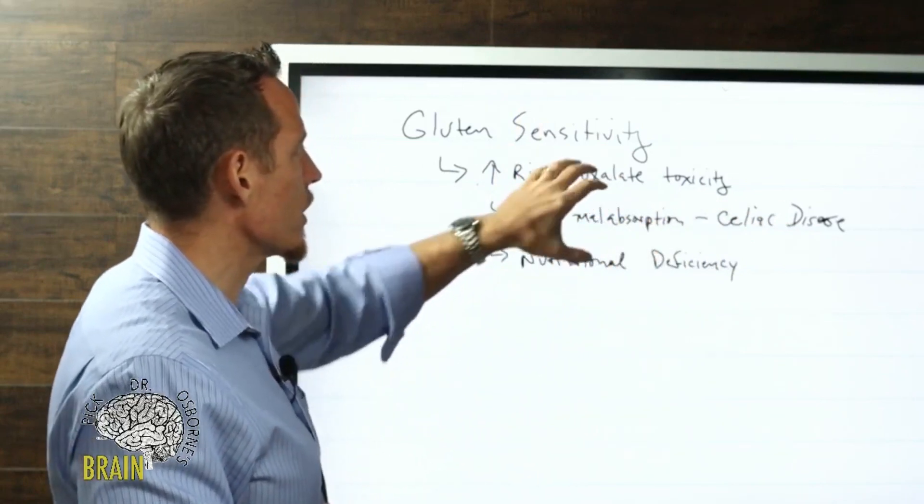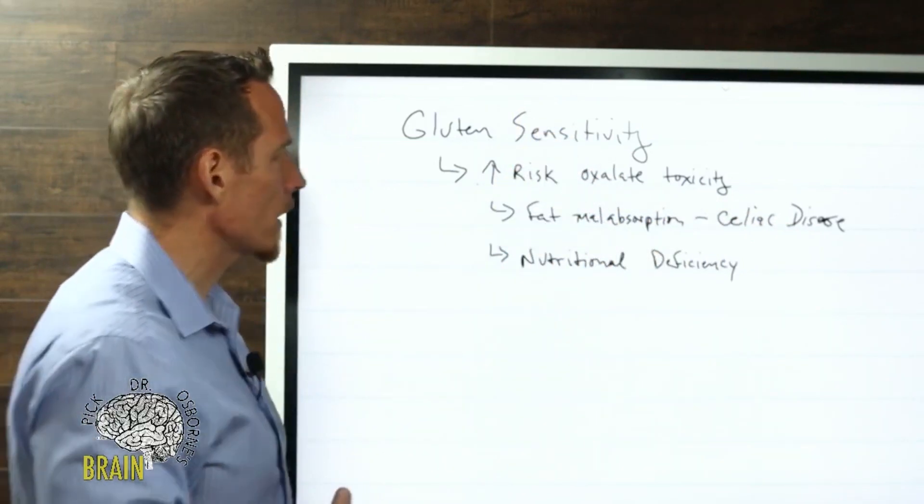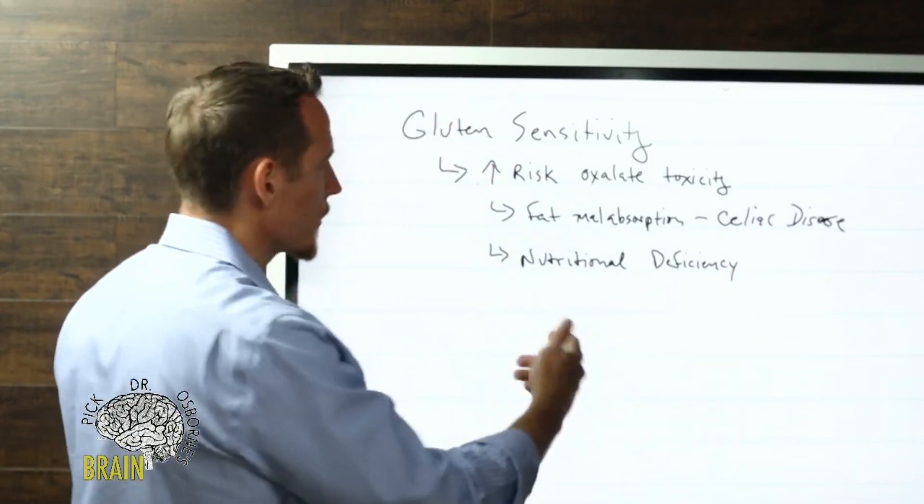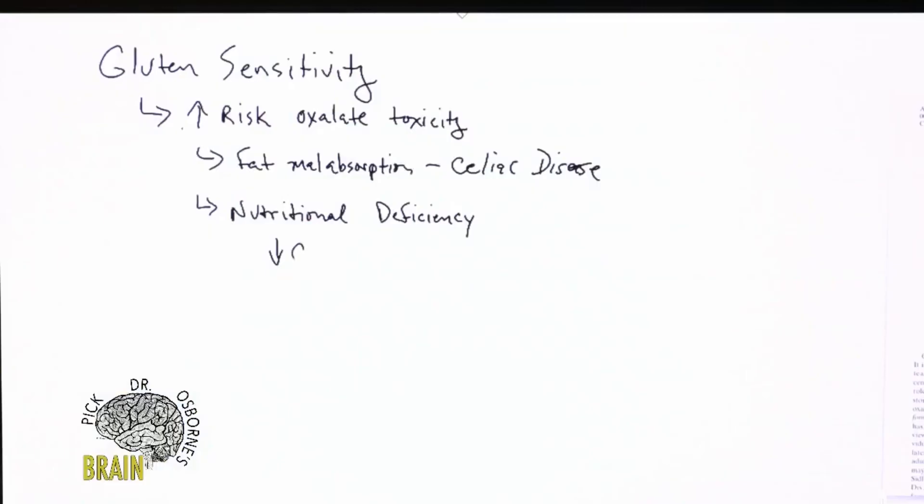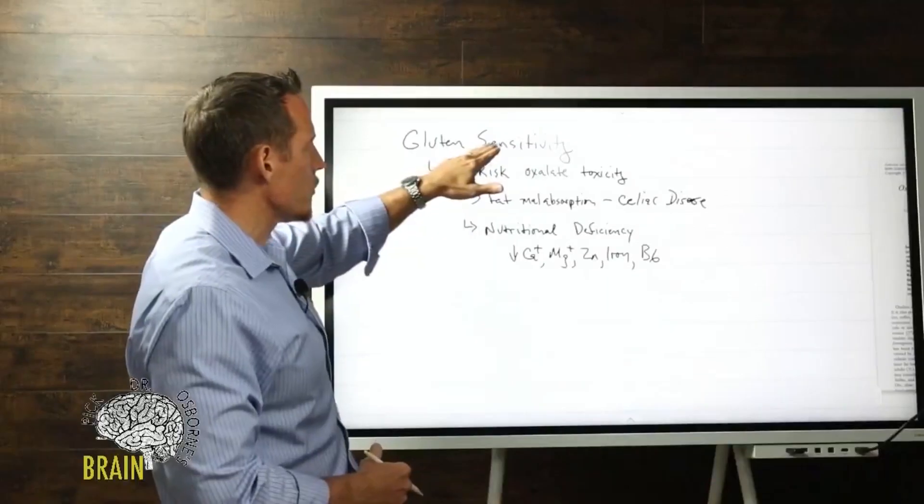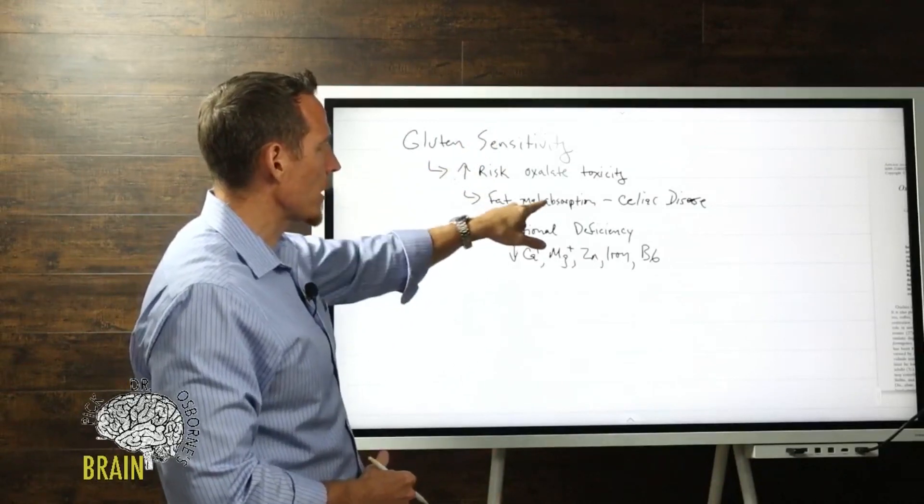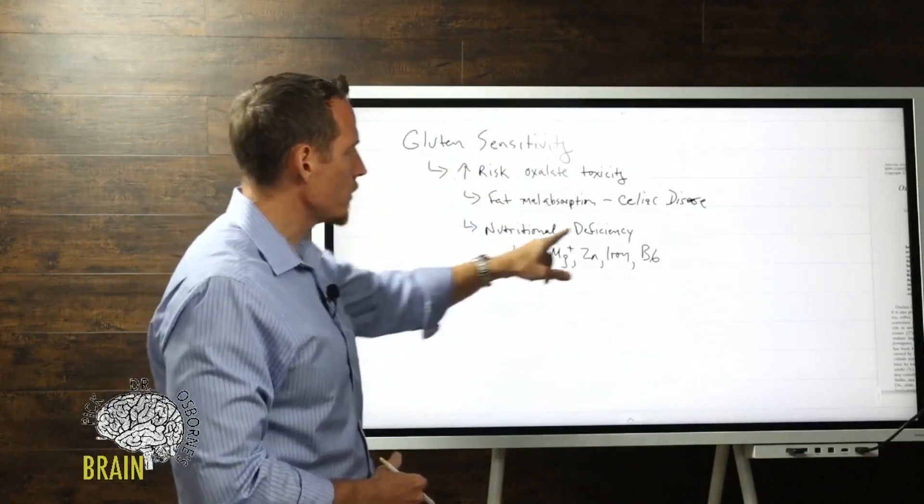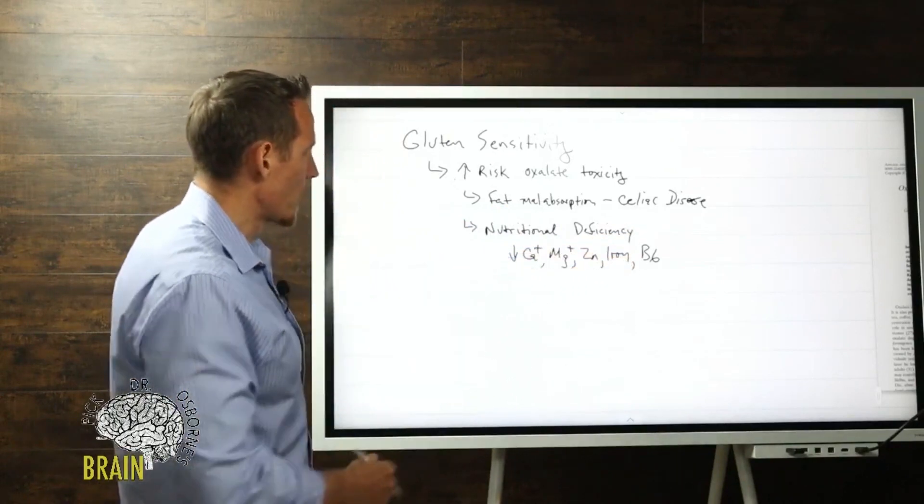This is one of the reasons why those with gluten issues, especially celiac disease that suffer with fat malabsorption, can actually have an increased risk for development of oxalate toxicity. We also have nutritional deficiency can increase the risk. For example, low levels of calcium and magnesium, low levels of zinc and iron, low levels of vitamin B6. Vitamin B6 plays a role in metabolizing oxalate. If you have nutritional deficiencies of these particular nutrients - which by the way is very common to see in people with gluten issues - remember gluten causes malabsorption, not just fat malabsorption but also vitamin and mineral malabsorption. These nutritional deficiencies can increase your risk for oxalate toxicity.